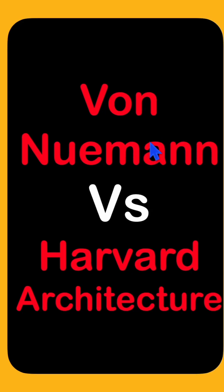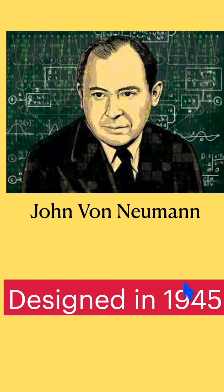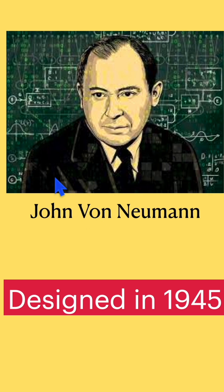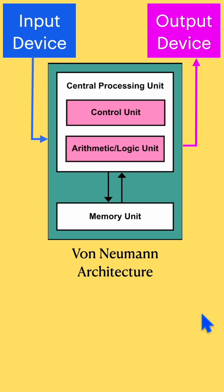What is the difference between von Neumann and Harvard architecture? These two are very popular computer architectures. Von Neumann architecture was designed by the very famous mathematician and physicist John von Neumann in 1945, and this was a very simple architecture where the CPU can interact with input-output devices as well as the memory unit.